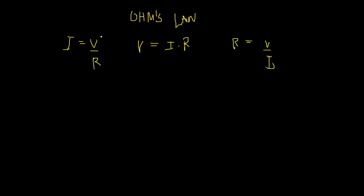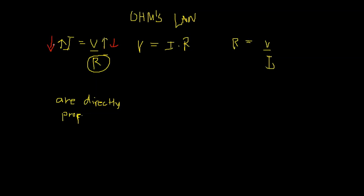Here in the first version, this tells us that if R is constant — meaning that R does not change — then I and V are directly proportional. Meaning that if there is an increase in voltage, the current will also increase. Now if the voltage decreases, the current will also decrease, with resistance constant.